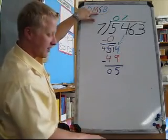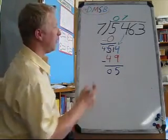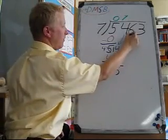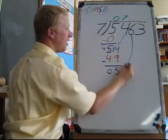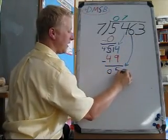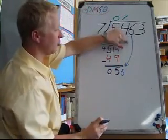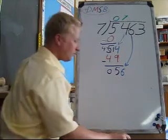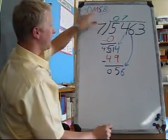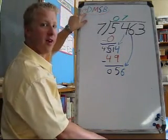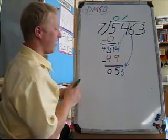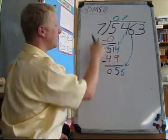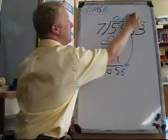Now that I have S subtracted, I need to B bring down. And I bring down the next digit which is a 6. And I like to draw the arrows just to remind me which digits I have brought down. I've brought down. So now I go back to the beginning of the acronym and I divide. 56 divided by 7 is 8.